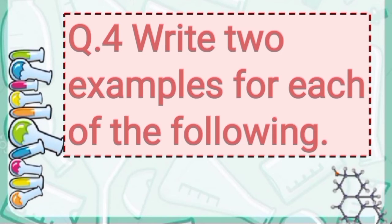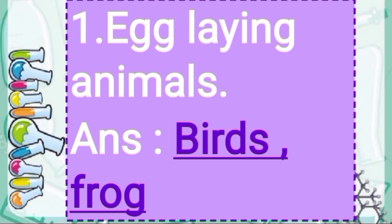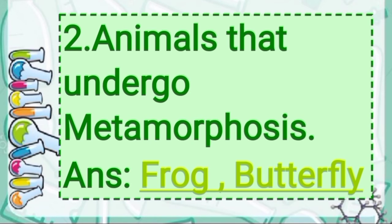Now let's write two examples for each of the following. First question: egg-laying animals. The answer is birds and frog. As you know, many animals reproduce by laying eggs, and birds and frogs also reproduce by laying eggs.